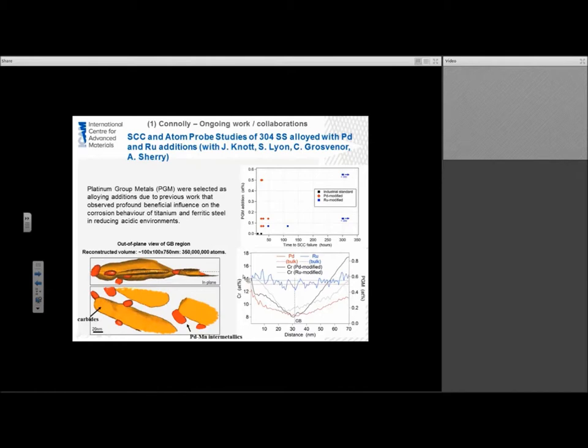Whereas when we have the palladium modified material, we see basically the same performance as what we would see in an industrial standard, a 304 steel without any PGM additions. If we take a look at some of the atom probe work, if we take a look at an out-of-plane look at a grain boundary, we see quite a few carbides laying along the boundary, but we also see quite a few of these red spots. These red spots are actually palladium-manganese intermetallics. If we take a look at the depleted regions around the grain boundary, we see the chromium. In all cases, we've got a chromium depleted zone after these heat treatments down to below 10 atomic weight percent. In the case of the ruthenium, we see a fairly even amount of ruthenium across that boundary. Whereas with the palladium, we see a decrease. We don't see much palladium at the grain boundary itself. We wouldn't have been able to see this without the atom probe.